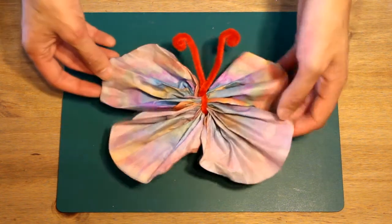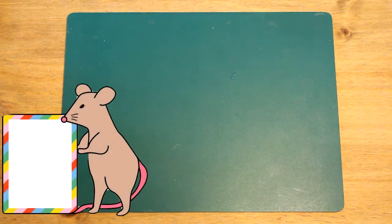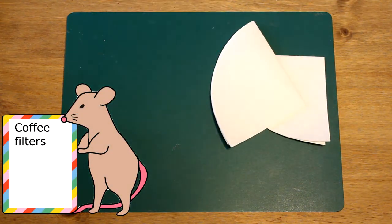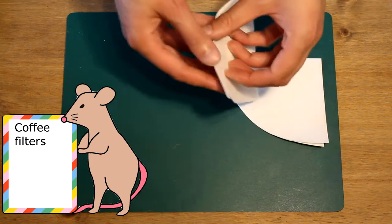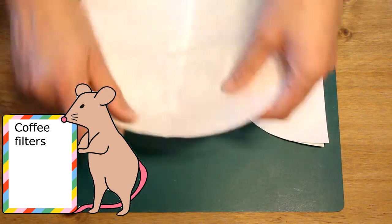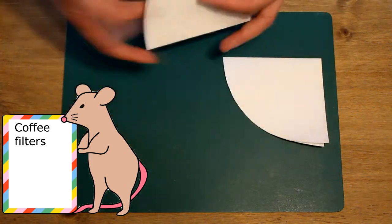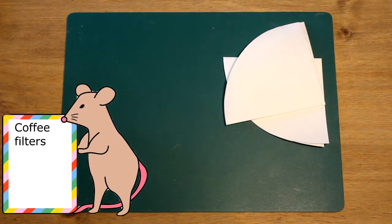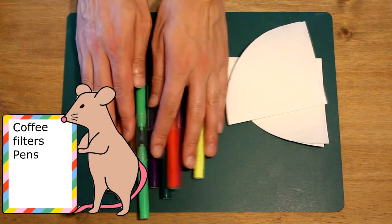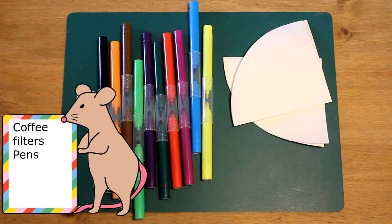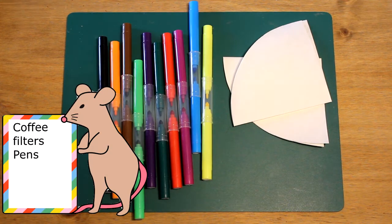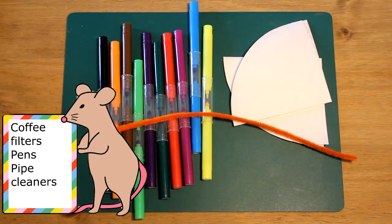So I'll very quickly run through what we need for this. There's not a lot of stuff but they do look really pretty. You'll need two coffee filters. Now these ones fold out into a circle, they're just folded because it's easier. So two circular coffee filters are fine, a load of marker pens, and a pipe cleaner.